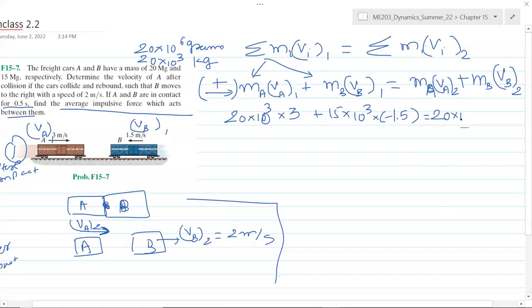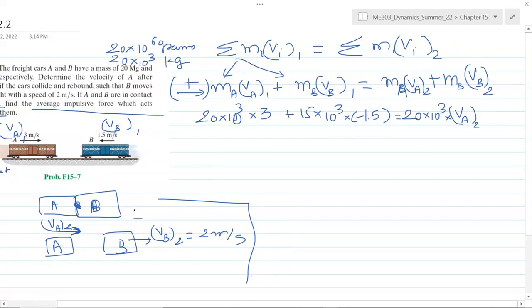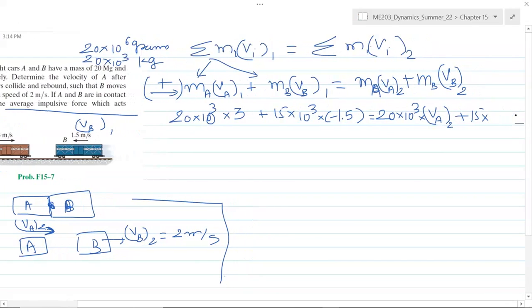Again, this is 20 times 10^3 times v_A2, velocity of car A after impact. We assume that it's going right so that's why it's positive, but we do not know its magnitude. And finally it's 15 times 10^3 times 2—it rebounds and B goes towards right with 2 meters per second.